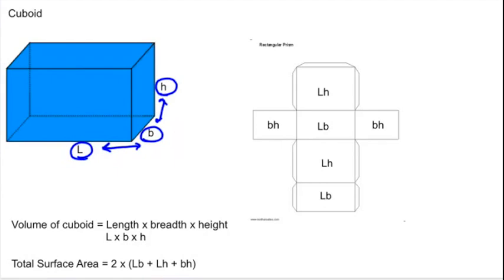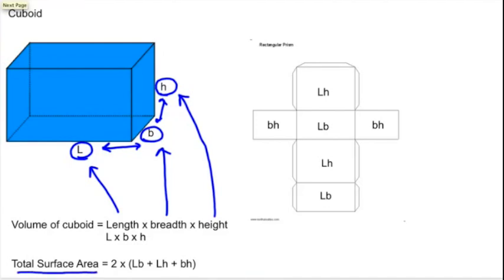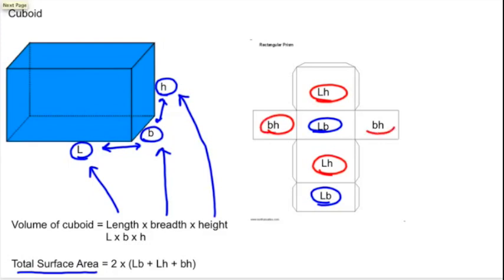So the volume of the cuboid can be found by multiplying length times breadth times height. The total surface area of a cuboid can be found by taking twice the sum of length times breadth, length times height, and breadth times height. Let's just pretend those were color coordinated.